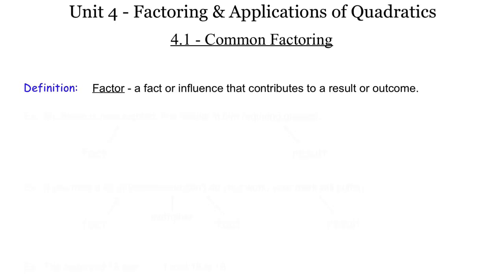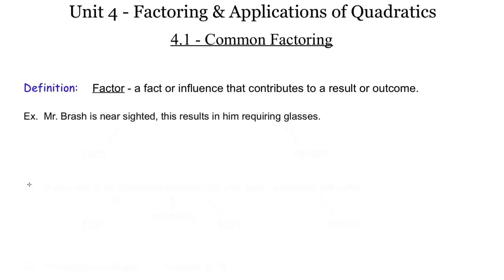So, Common Factoring. Let's talk about what a factor is. A factor is a fact or an influence that contributes to the result or outcome of something. For example, Mr. Brash is nearsighted — this results in him requiring glasses. So our fact is that I am nearsighted, and the result or outcome is therefore I wear glasses.